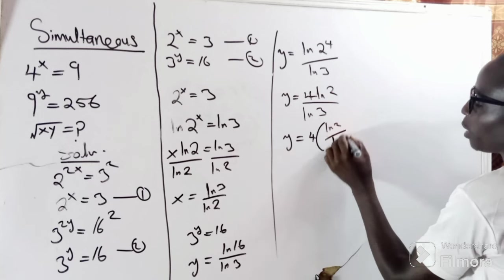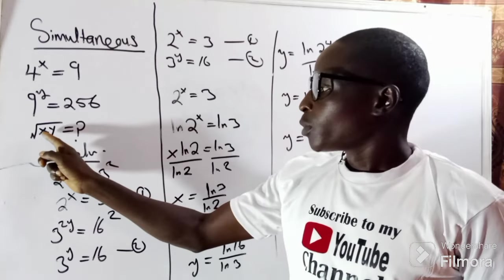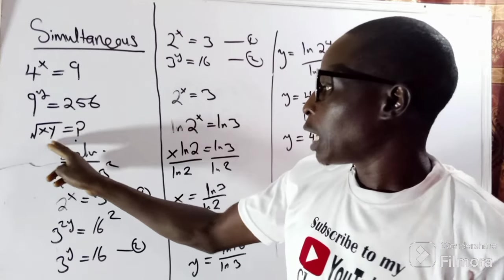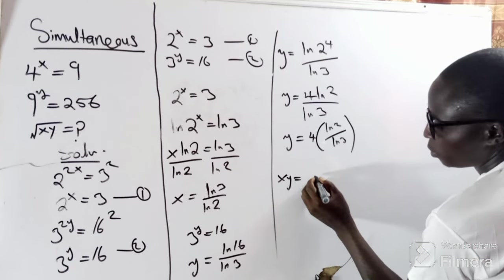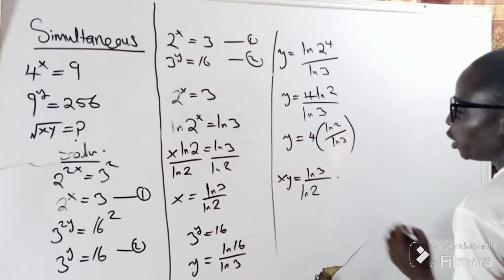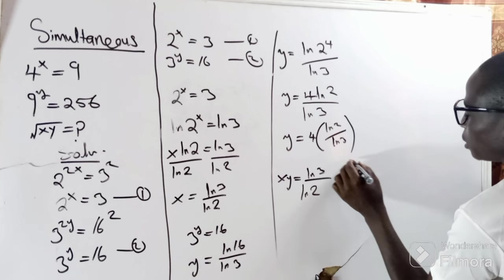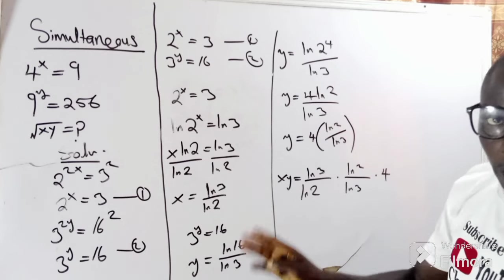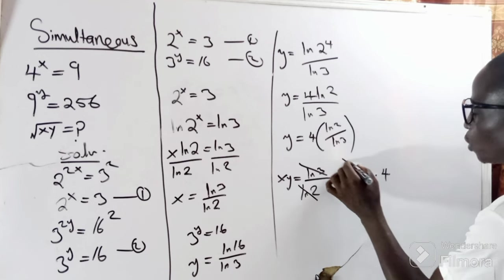Remember, we are looking for the square root of the product of x and y. So let's find xy — that means x times y. xy equals ln(3)/ln(2) multiplied by 4·ln(2)/ln(3). We can bring the 4 out front. The ln(3) cancels with ln(3), and ln(2) cancels with ln(2), so the product xy equals 4.